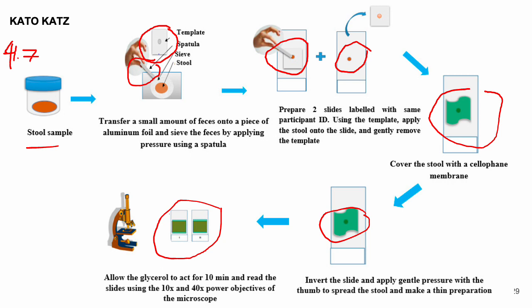The sample is spread throughout the cellophane membrane. Allow the glycerol on the cellophane membrane to act for 10 minutes, then read the slide using 10x and 40x power objectives to look for hookworm eggs.